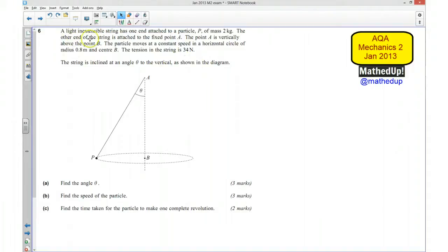In this question we have a light inextensible string that has one end attached to a particle P of mass 2 kilograms. The other end of the string is attached to a fixed point A. The point A is vertically above the point B. The particle moves at a constant speed in a horizontal circle of radius 0.8 metres and centre B.